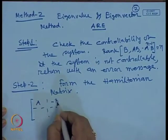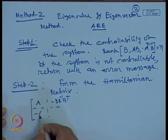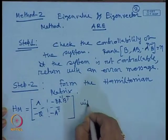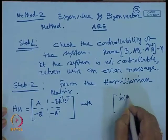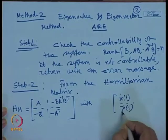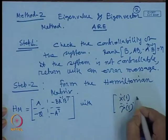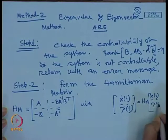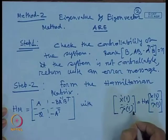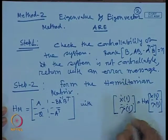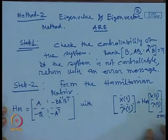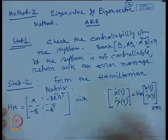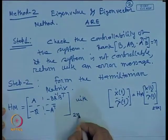The Hamiltonian matrix H_m is: [A, −B·R⁻¹·Bᵀ; −Q, −Aᵀ]. This matrix arises from the augmented system: [ẋ(t); λ̇(t)] = H_m·[x(t); λ(t)], where x(t) is the state vector and λ(t) is the co-state vector. Each has dimension 2n×1, and H_m has dimension 2n×2n.